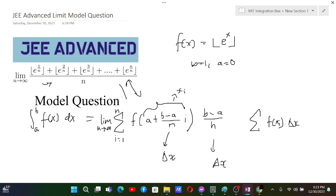So this is actually the same as this sum. And now, if it is the sum itself, we can write this as an integral. So this sum can be written as integral from a is 0, b is 1, and function is e to the power x, and then whole to the GIF, dx.